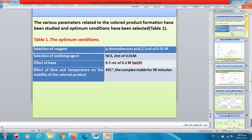From our results and discussion, the various parameters related to the colored product formation have been studied and optimum conditions have been selected. Table 1 shows that selection of reagents, para-aminobenzoic acid gives the high intensity of the product, so we chose it as reagent of our work. Selection of oxidizing agents, N-chlorosuccinimide with 2 ml of 0.01 molarity is the optimum amount and optimum oxidant when compared with N-bromosuccinimide and KIO4. Effect of base: the reaction needs strong base, so we used NaOH with amount of 0.5 ml of 0.2 M sodium hydroxide. It is the optimum volume and concentration of base.